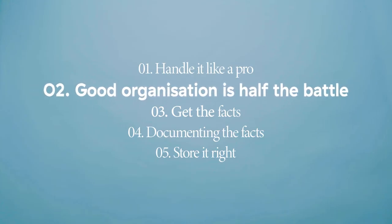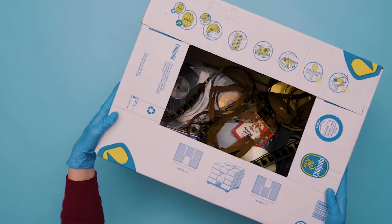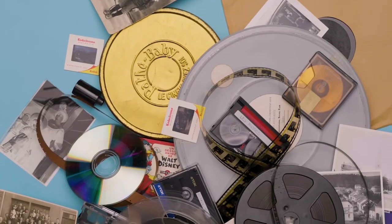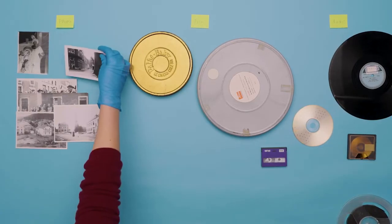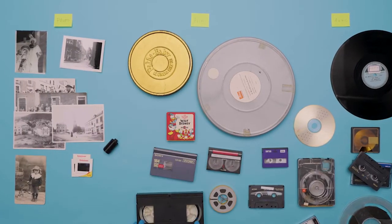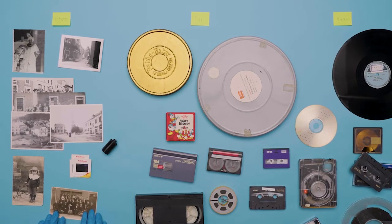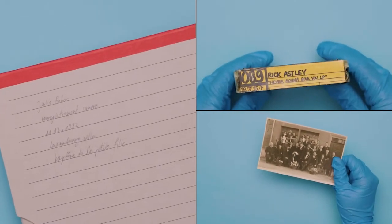Two. Good organization is half the battle. Now that you are prepped and ready to go, the next important step is to get a clear overview of what you have. Start by sorting and establishing an organizational system that works for you. We recommend you sort your documents according to media type. Then you can come up with further divisions.